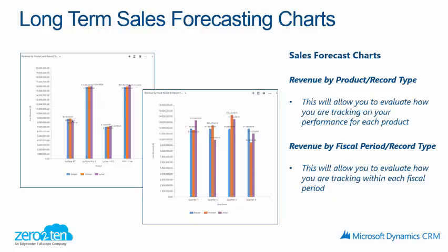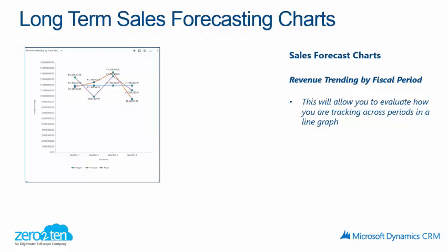The solution is also comprised of a few different charts. The charts are visuals that depict the views in the background. The revenue by product record type chart allows you to evaluate how you are tracking performance for each product within your forecast. The revenue by fiscal period allows you to evaluate how you are tracking your forecast via the fiscal period. The third chart also looks at fiscal period, but is more geared towards revenue trending across various quarters or periods.